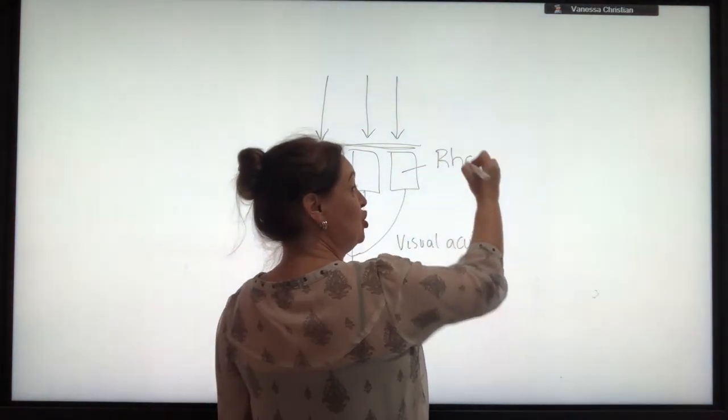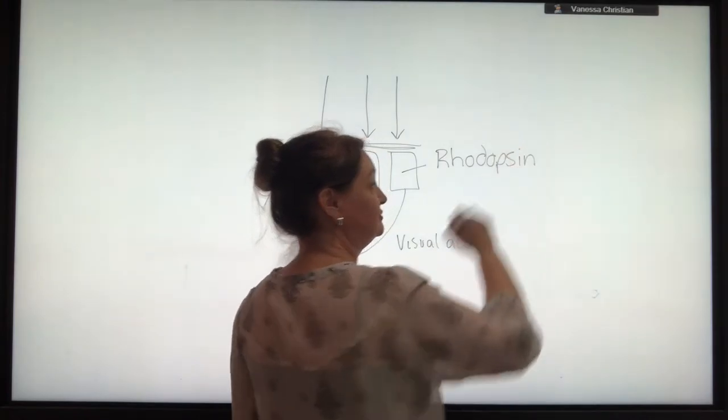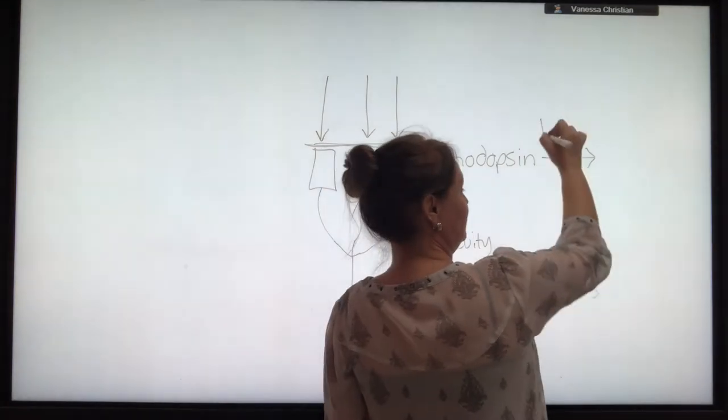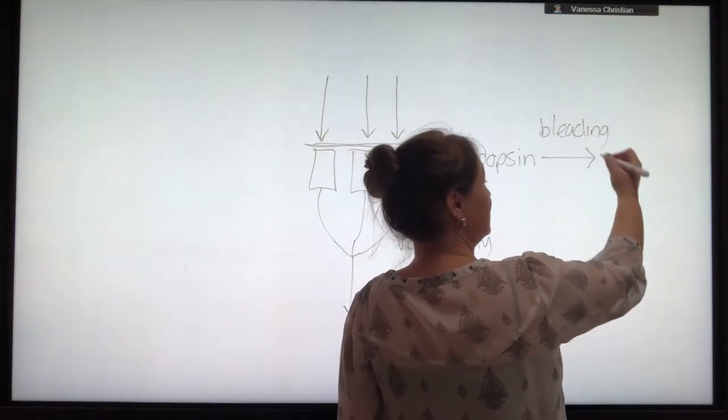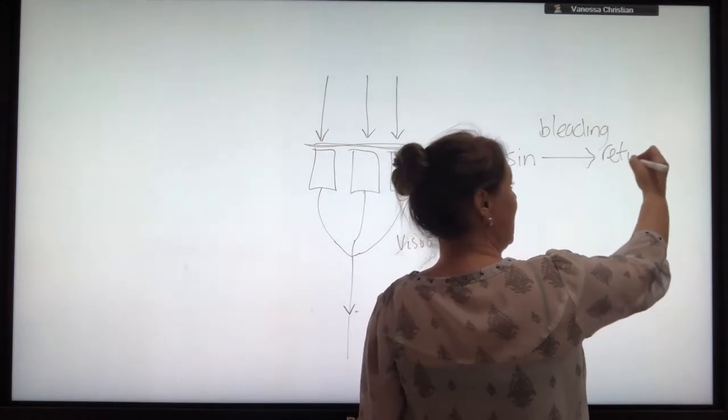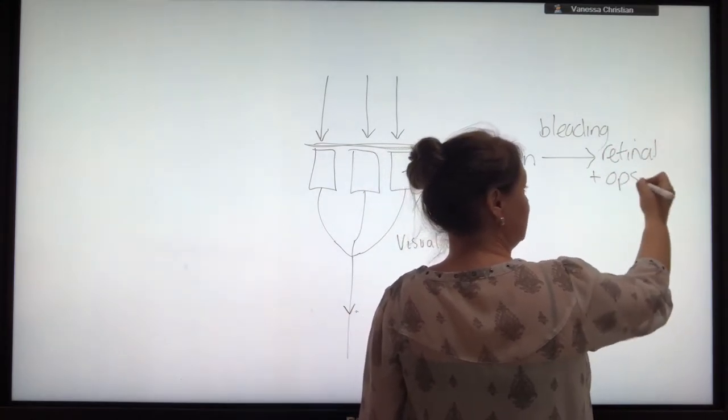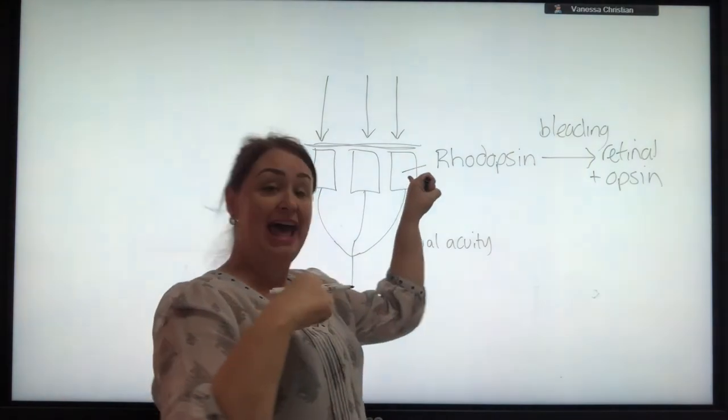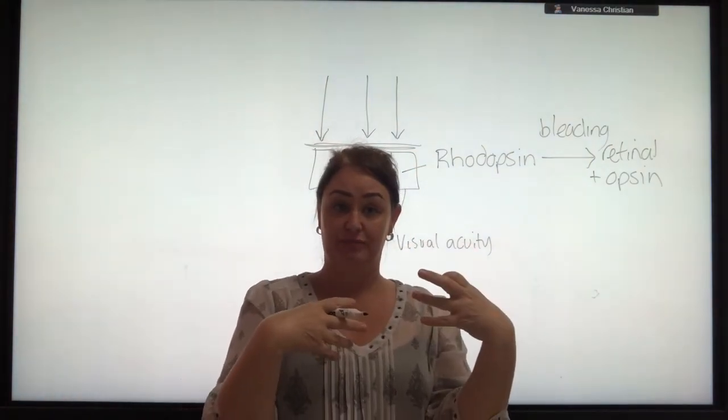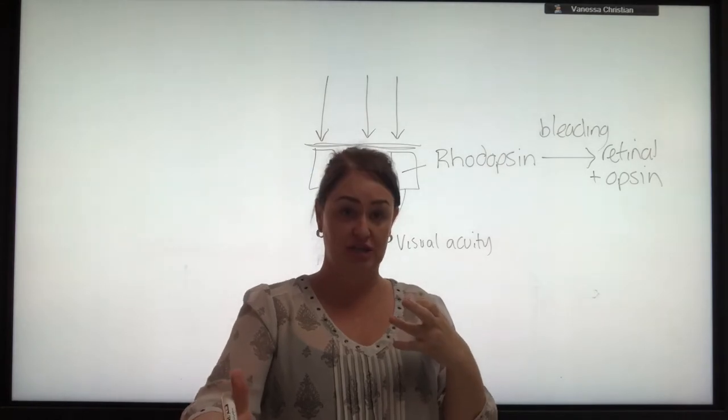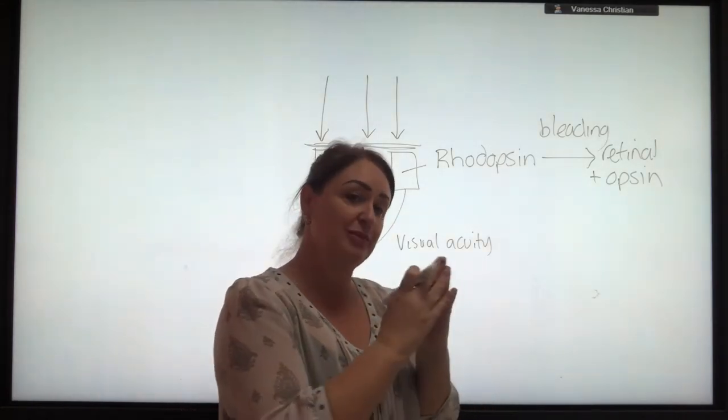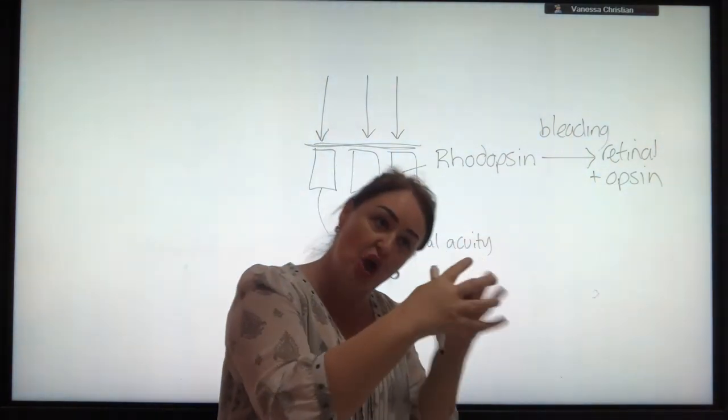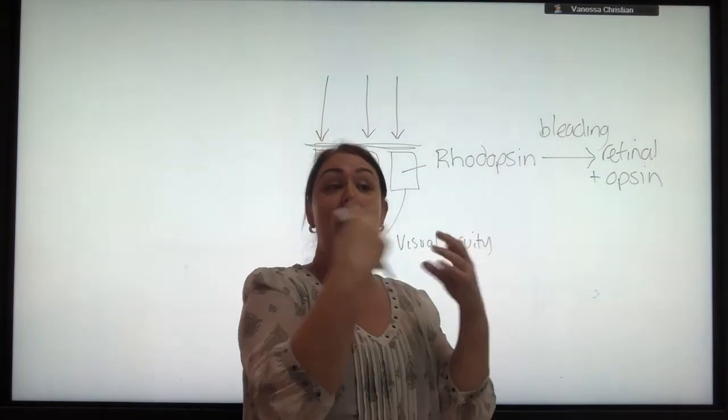You contain a pigment called rhodopsin, and when light lands on that rhodopsin, we get a bleaching effect. And it breaks down into retinal and opsin. And it is those chemicals inside there that then change the permeability to sodium and start off the whole action potential. So the Pacinian corpuscle, that's why we start with that one, because it's a really nice visual way to think. I can imagine myself pushing on that and opening the sodium ion channels, and that starts the action potential.